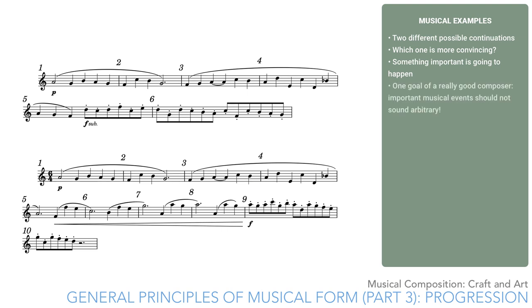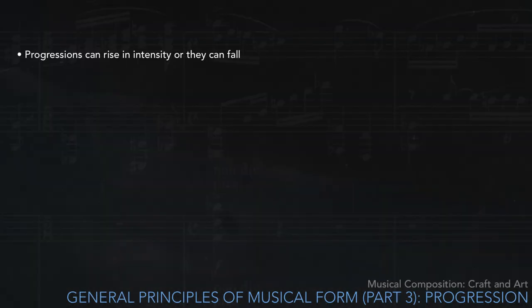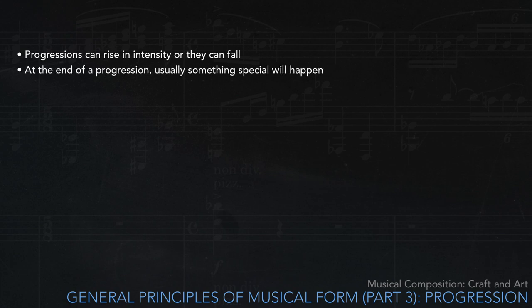This is one goal of a really good composer: important musical events should not sound arbitrary. Progressions can rise in intensity, as in the above example, or they can fall — for example, leading to a fade-out at the end of a phrase. At the end of progressions, usually something special will happen, marking it as the culmination. For example, a climax can be accented by adding something new, or by an important change in the musical material.